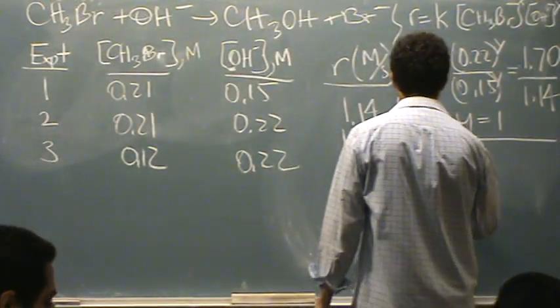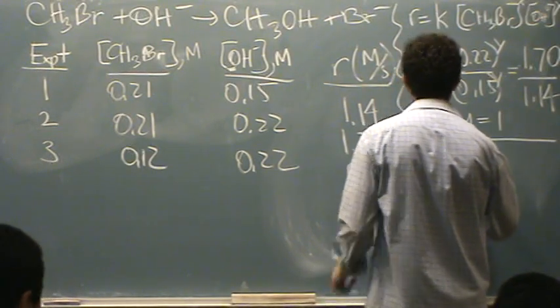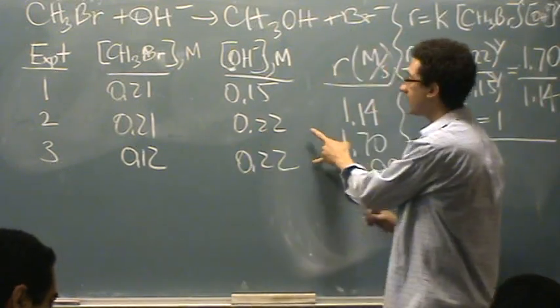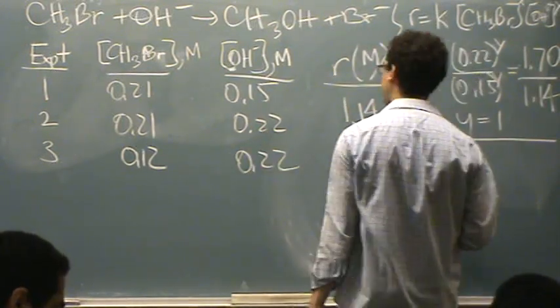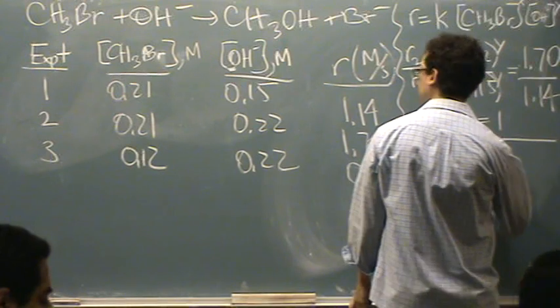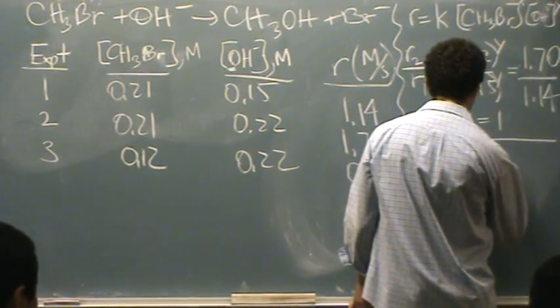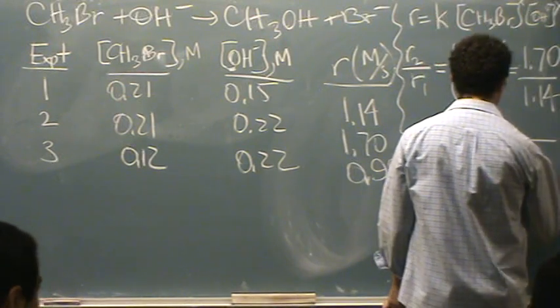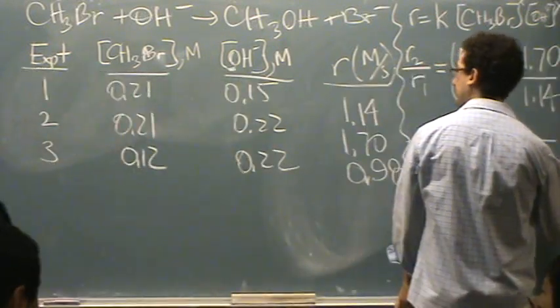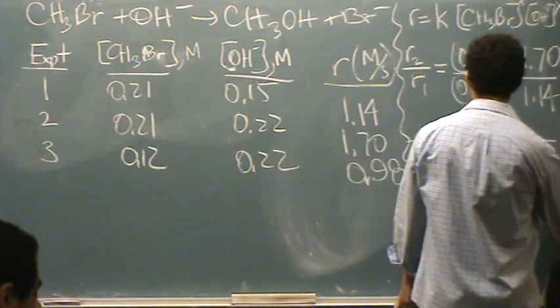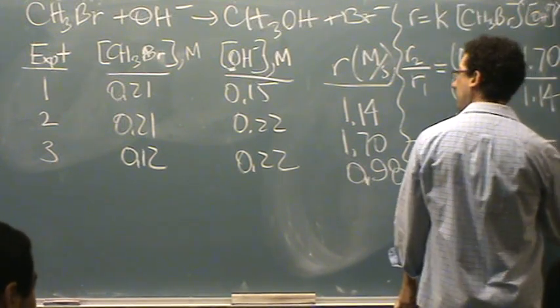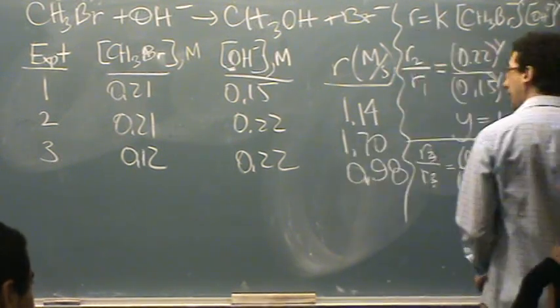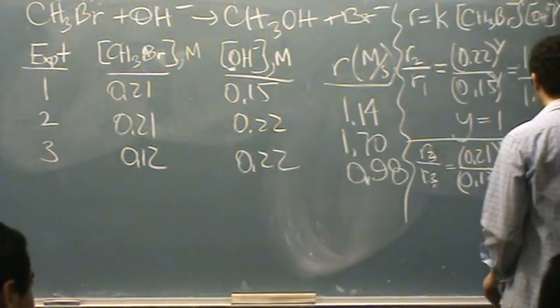So rate 3 over rate 2 equals, so now I'm only going to write down here because I know K is going to cancel, and I know OH- is going to cancel. So, it's going to be 0.21 over 0.12, and that's to the X, and that equals 1.7 over 0.12. So, I'm going to sort it backwards. I'm writing 2 over 3. 2 over 3. 1.70 over 0.90.